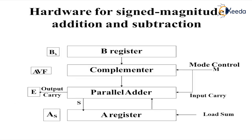Now let us consider the hardware for sign-magnitude addition and subtraction. Here you have registers to store the data. You have a complementer — represented as AVF — to complement the data. The registers are represented as VS. You have a parallel adder called E; if this adder contains A it is called EA, and if it contains B it is called EB. You have a register directly linked with A called AS, and a mode control called M.